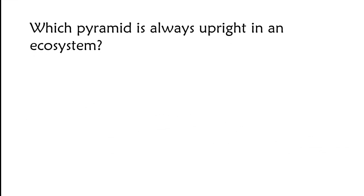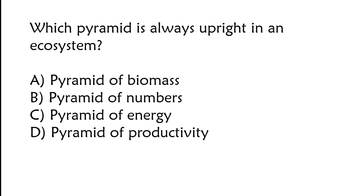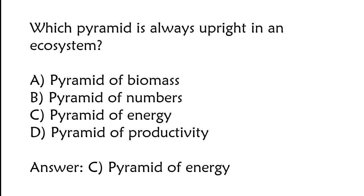Which pyramid is always upright in an ecosystem? A) Pyramid of biomass, B) pyramid of numbers, C) pyramid of energy, D) pyramid of productivity. The correct answer is option C, pyramid of energy.